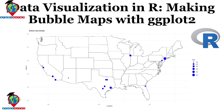Hello everyone, welcome to the Study Hacks Institute of GIS and Remote Sensing. Today I will discuss a very important topic: data visualization in R — how we can easily make bubble maps with ggplot using R Studio. I will show you the entire process step by step. After completing this tutorial, you will be able to make a bubble map using R Studio with different types of data.